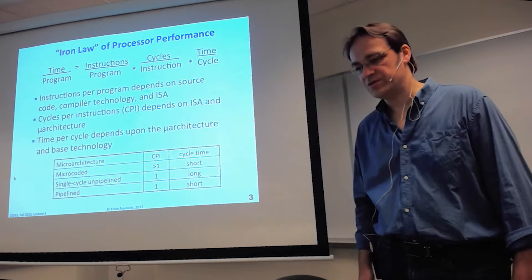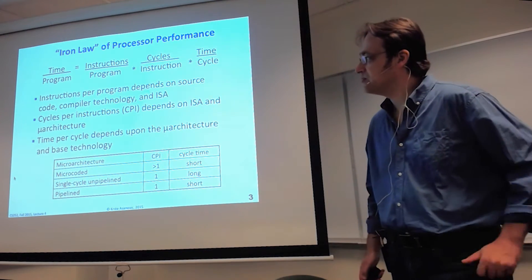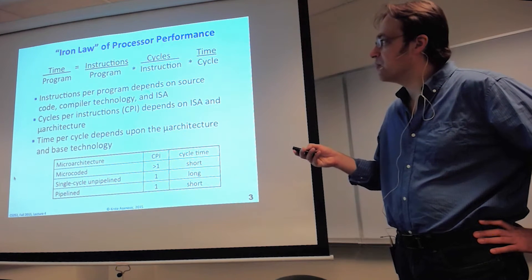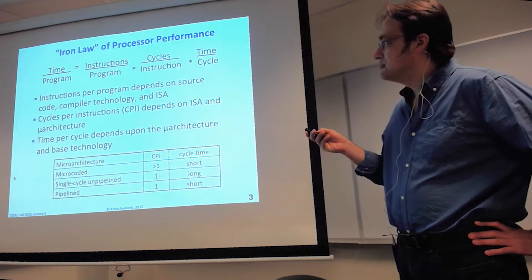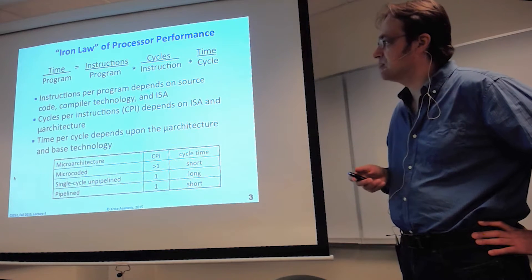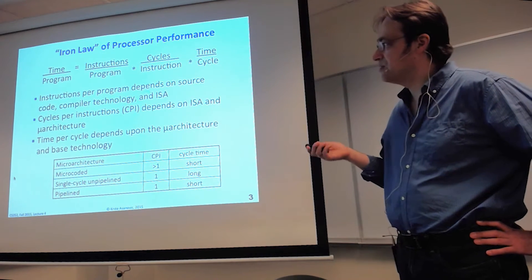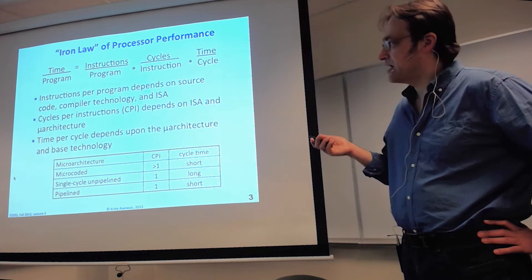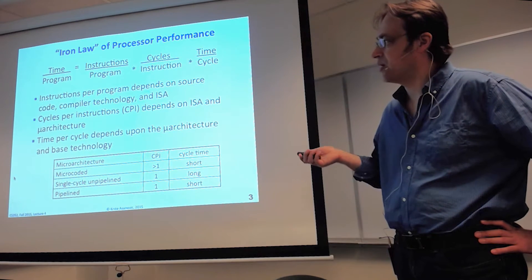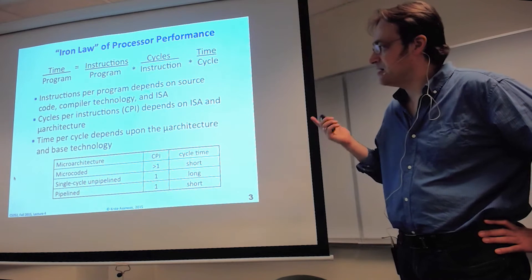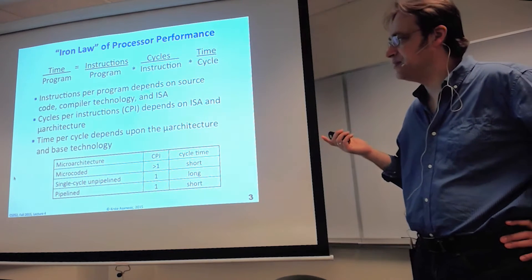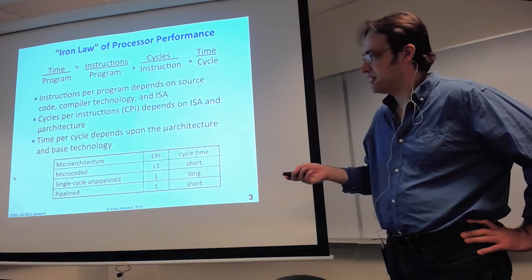The way people look at performance is the iron law, which breaks down the components contributing to execution time. Time to run the program equals instructions in the program times CPI (cycles per instruction) times the cycle time. Instructions per program depends on source code, compiler, and ISA. Cycles per instruction depends on the ISA and microarchitecture. And cycle time depends on the microarchitecture — how much work you're trying to have the logic gates do each clock cycle — as well as the speed of the base technology.